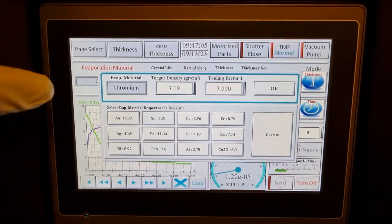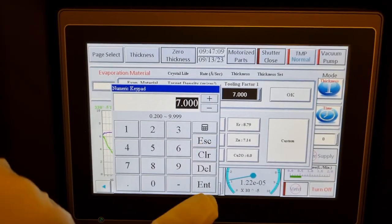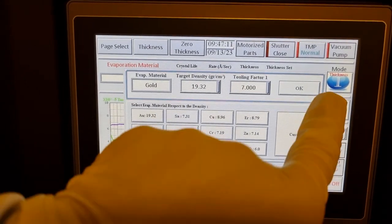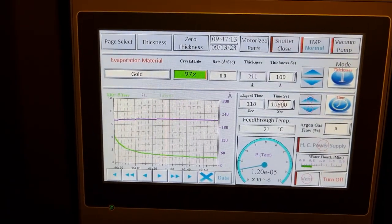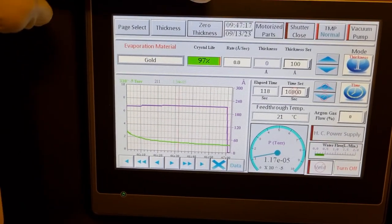To do the gold coating, press the material, change it to gold, check the tooling factor. This tooling factor is too high. It should probably be around 4. Select OK. This tells the sensor how to understand a change in mass as a thickness.